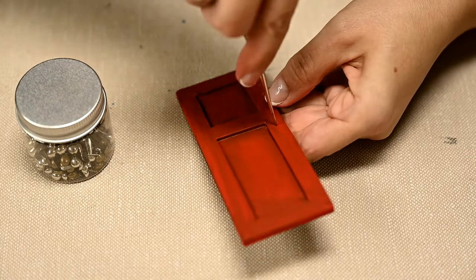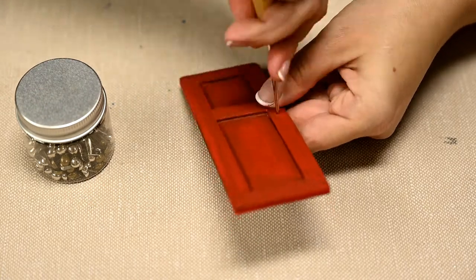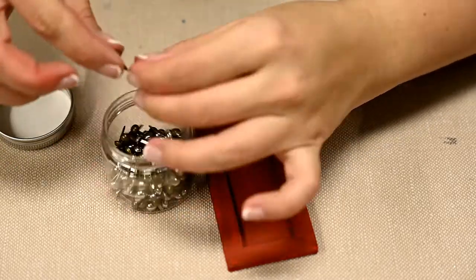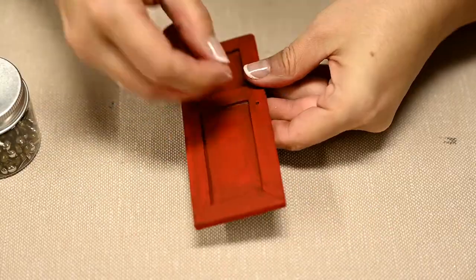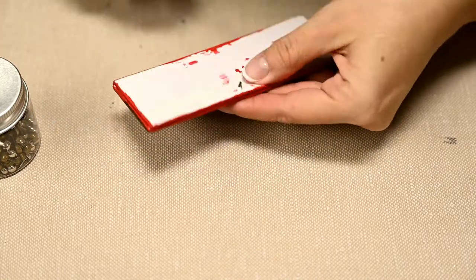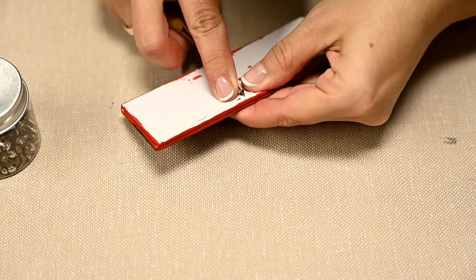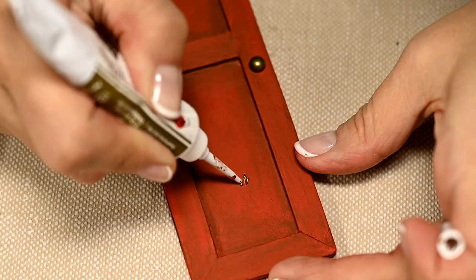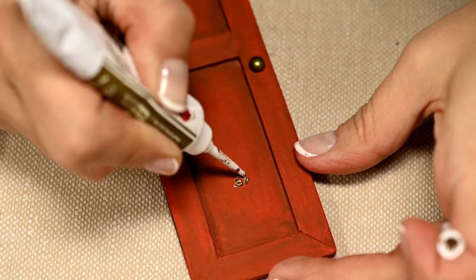I'm adding some brad as a door handle. You can also use a suitable bead or make it out of polymer clay or even draw it with contour paint. I'm also drawing the house number over the door with contour paint.